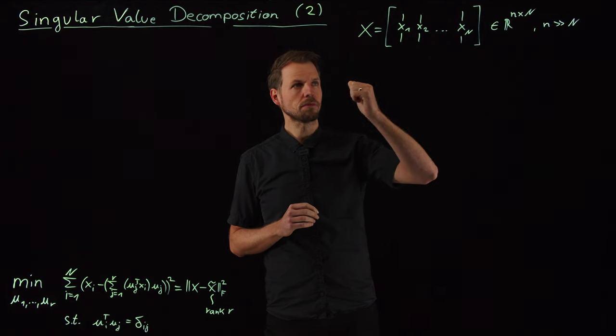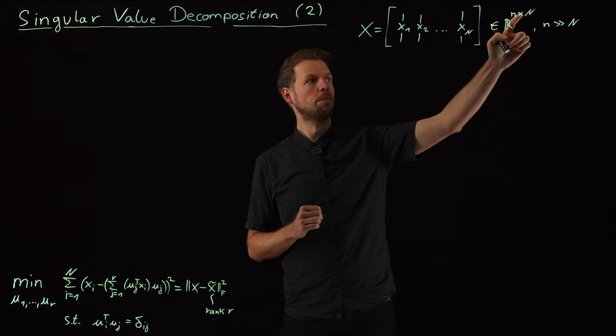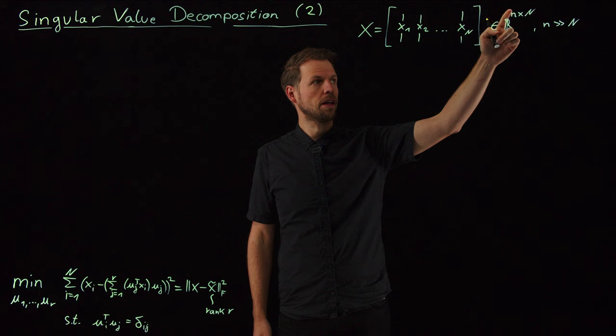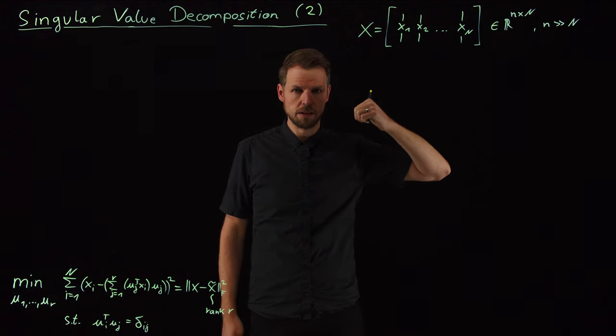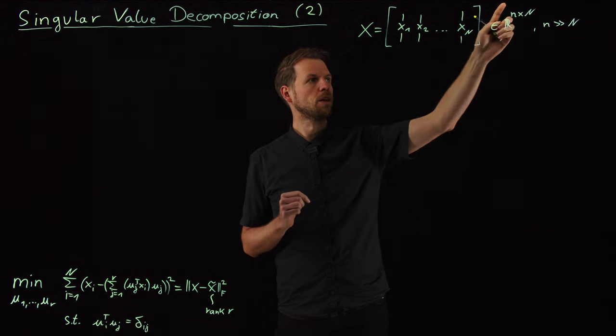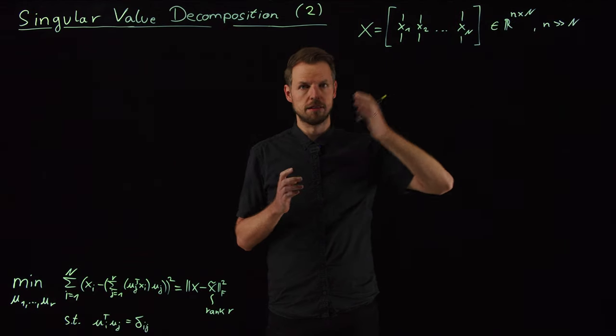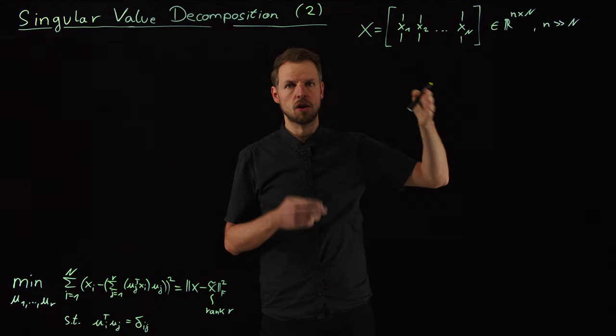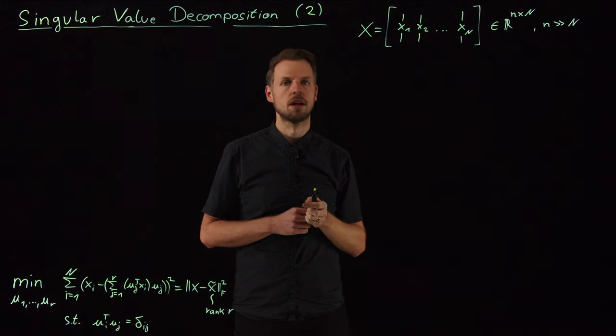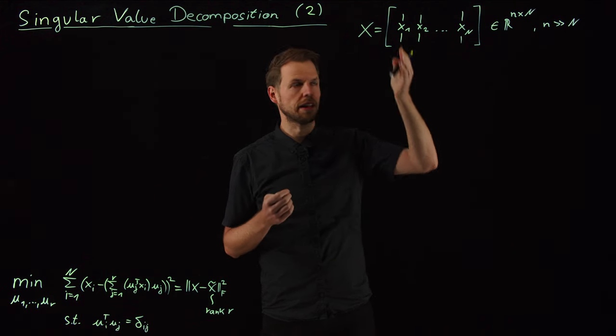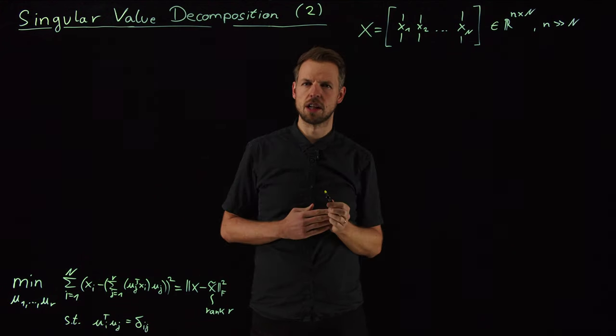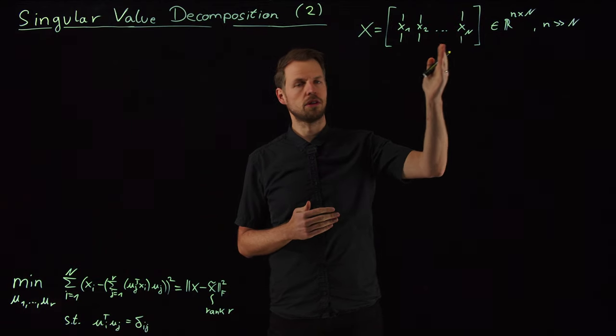And so this is our data matrix. It is little n by big N, meaning that we have a lowercase n-dimensional state space, could be very high. And we have capital N snapshots in time. So this is a time series of a dynamic system. It can also be different data sets like images, but since this is a course on dynamic systems, we are going to consider this as a time series.